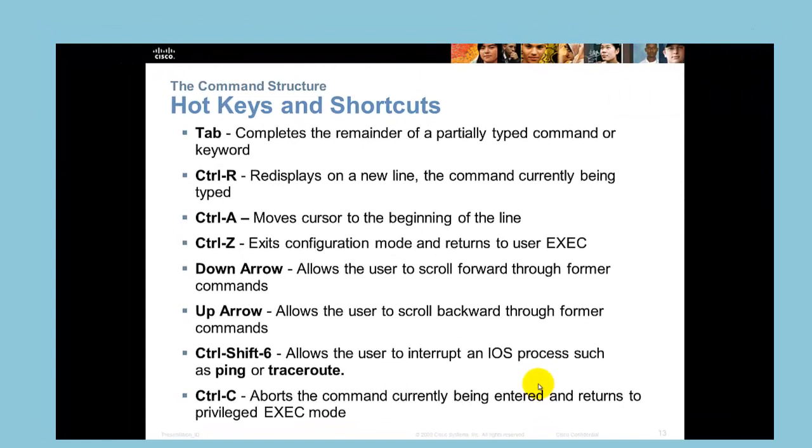Down arrow is going to allow the user to scroll forward through former commands. If I've went backwards and looking but I went too far, I could go back forward and get the one that I typed wrong and make that change and just press enter and it sends it again. Up arrow allows the user to scroll backwards through former commands.